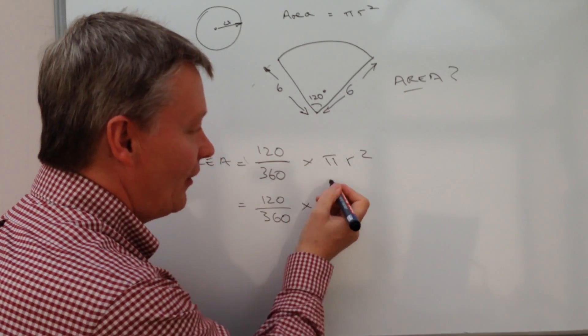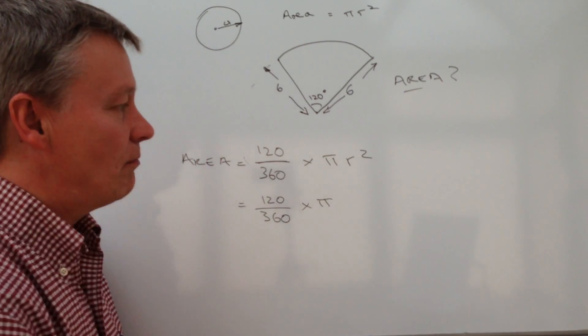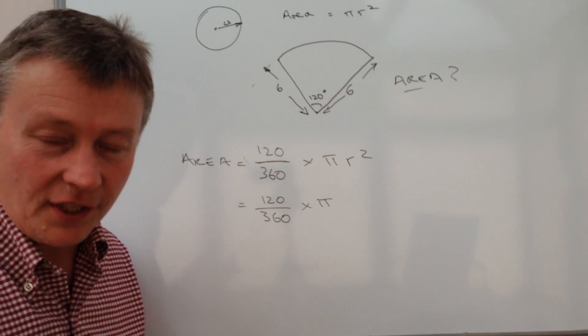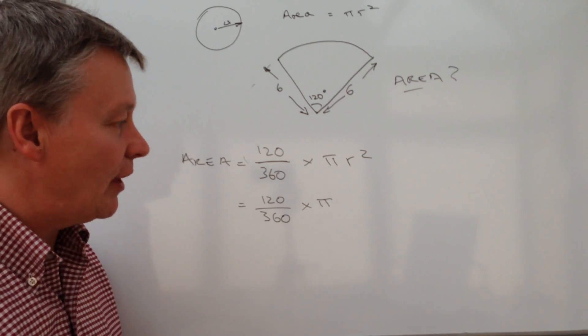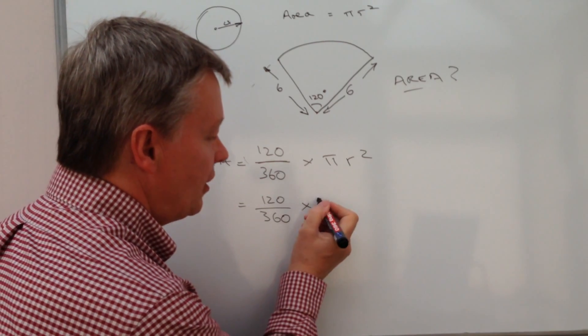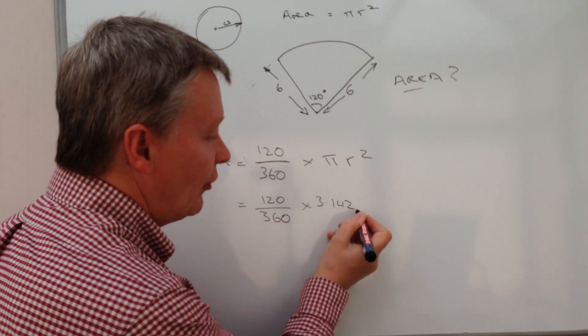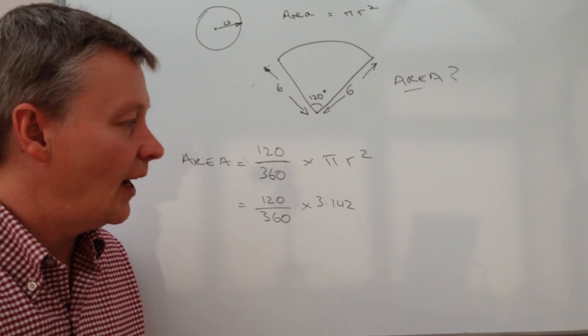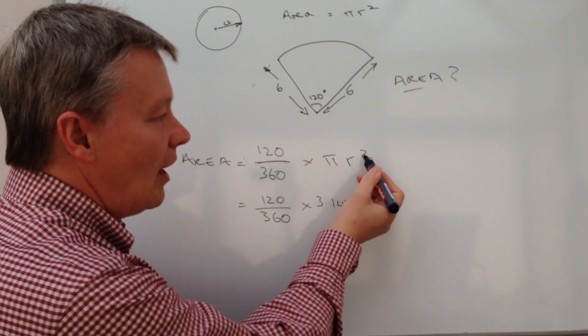You're going to multiply that by pi, which in most calculators, scientific calculators, is pre-programmed for you. On some papers, they might ask you to use 3.142 or something like that.